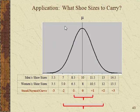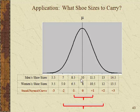For example, if you're running a shoe store and want to know what shoe sizes to carry, you can think in terms of the normal curve. For men's shoes, 68% of people fall between size 8.5 and 11.5. If you're willing to carry down to size 7 and up to size 13 for men, you're going to capture 95% of the population.